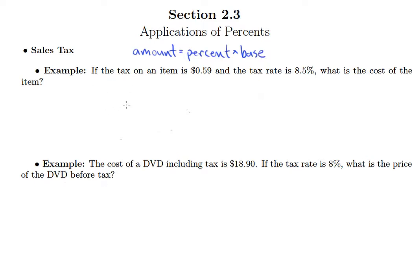In this first example it says if the tax on an item is 59 cents and the tax rate is 8.5%, what is the cost of the item? First of all let's identify which of these three things, amount, percent, or base, we're looking for here.